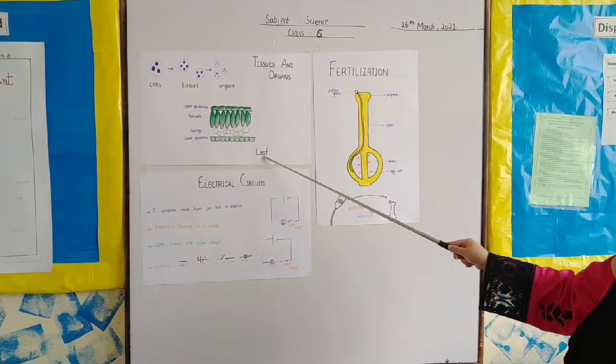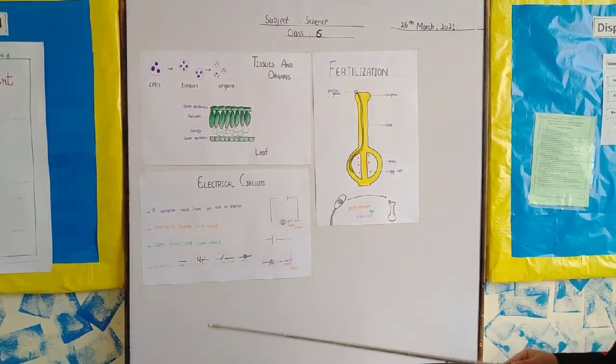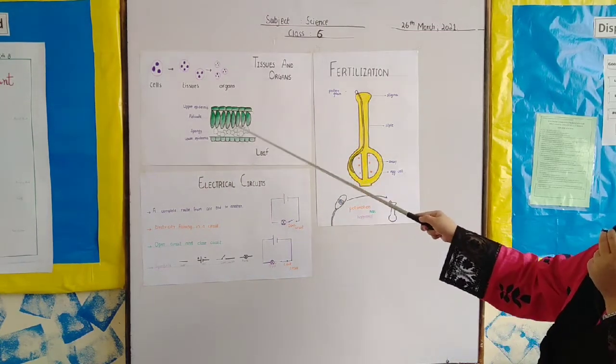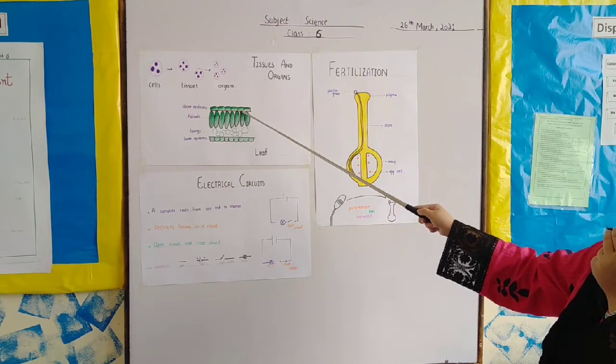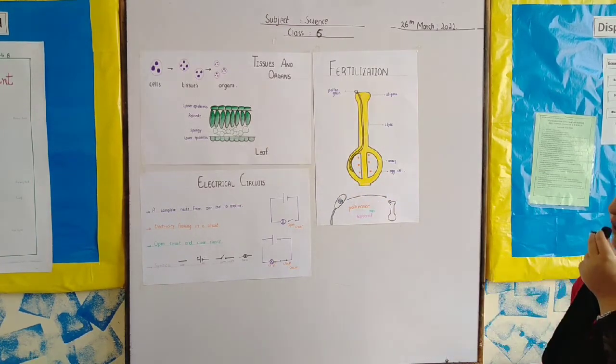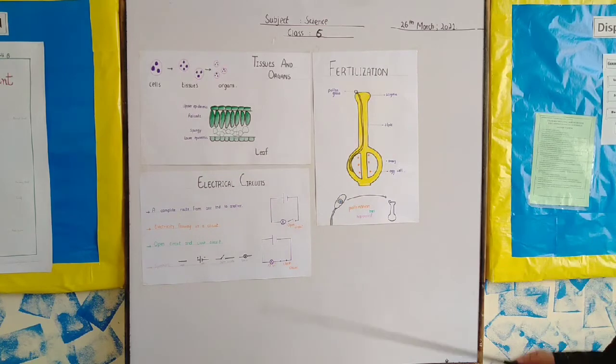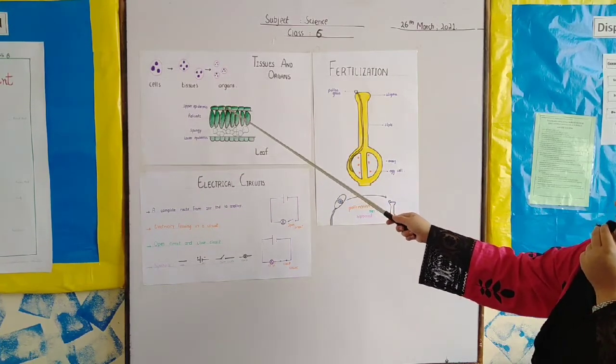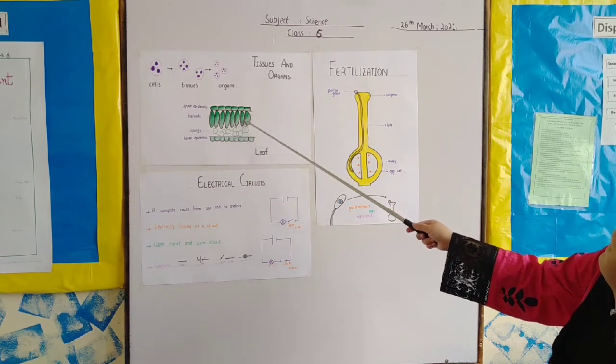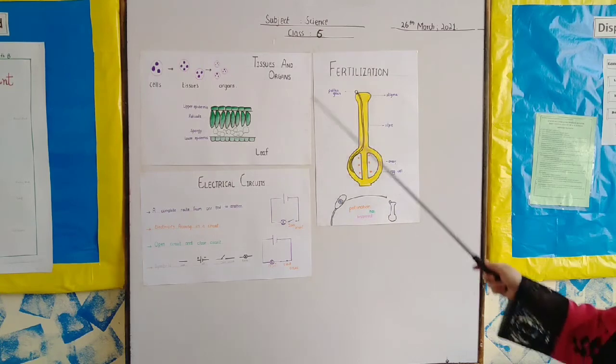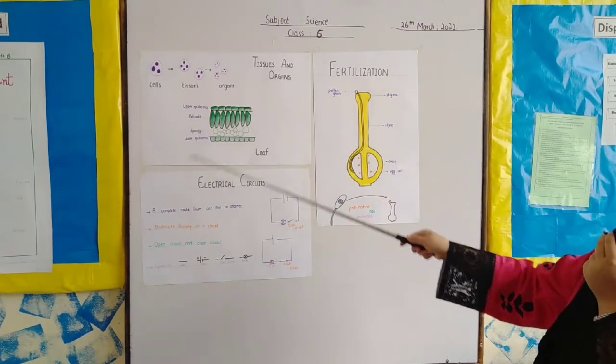For example, we take an example of leaf. When we see the internal structure of leaf, we say that there are four layers. The upper epidermis, its function is to protect and take the sunlight from the sun.